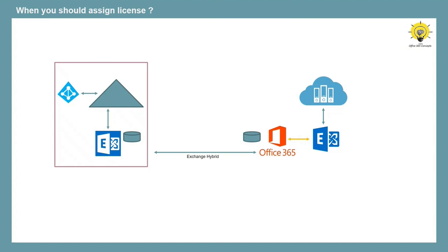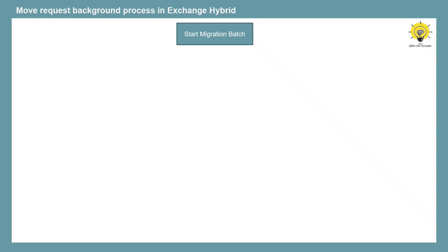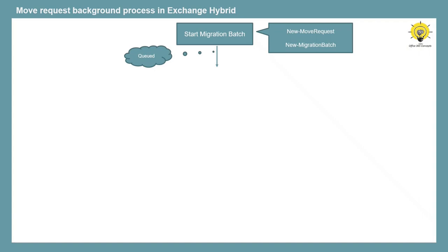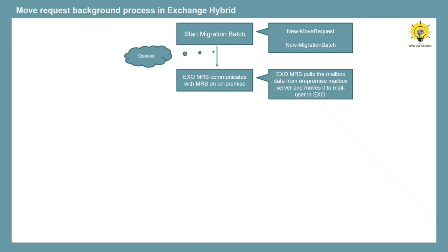Let's understand what happens in the background when we perform a move request in Exchange Hybrid. When we start a migration batch, a PowerShell command New-MigrationBatch is initiated in the background. If you initiate migration from PowerShell using New-MoveRequest, the same command will be initiated. At this point, the move request status will show as Queued, meaning the migration request is in the queue. In step two, Exchange Online Mailbox Replication Service communicates with the MRS service running on the on-premise Exchange Server. The MRS in Exchange Online pulls mailbox data from the on-premise mailbox server and moves the data to the mail-enabled mail user in Exchange Online. At this point, migration status will be In Progress.